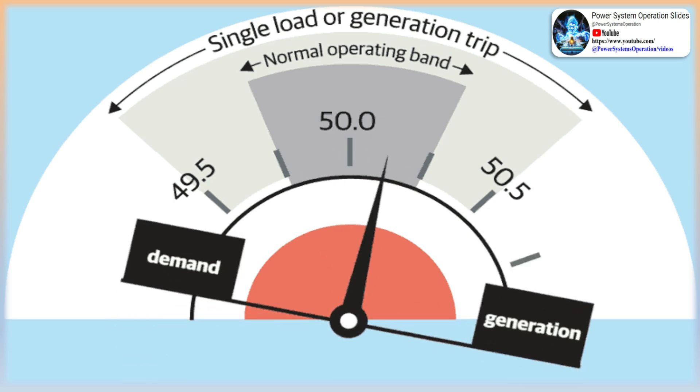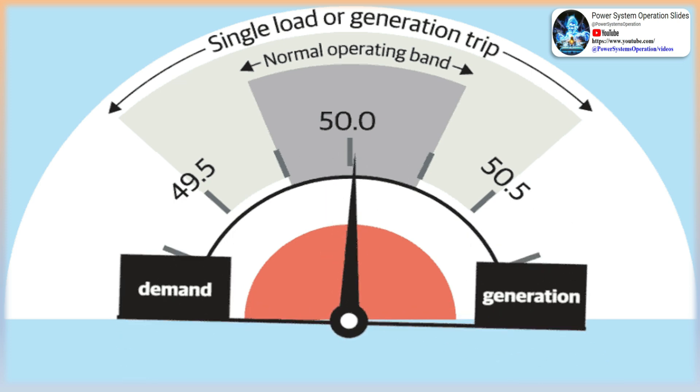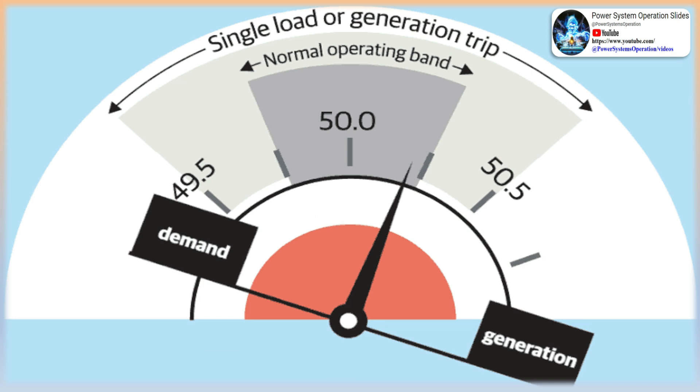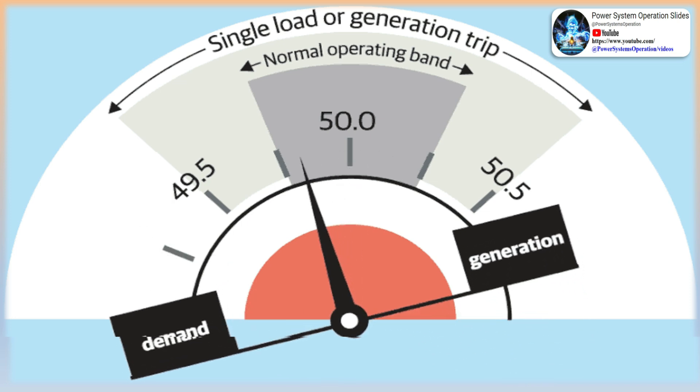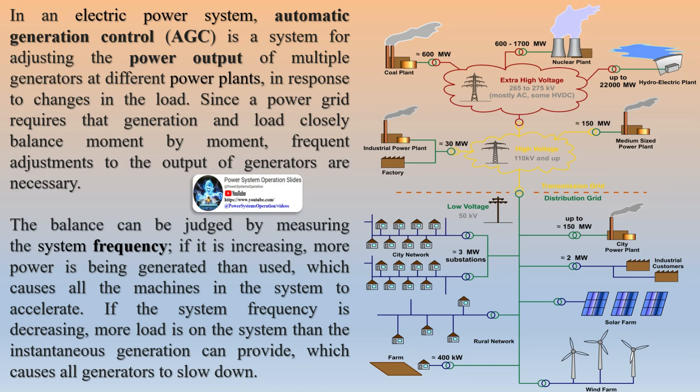The AGC will also automatically respond to system conditions and schedule changes with little manual input. The electrical system should be in a normal state for the AGC to function properly. The generation dispatcher is required to monitor the power system and have enough generation on bar to avoid a problem. AGC must only operate in Automatic Mode if the power system is stable and has AGC generation available and synchronized to the system. Let us discuss first AGC definitions.